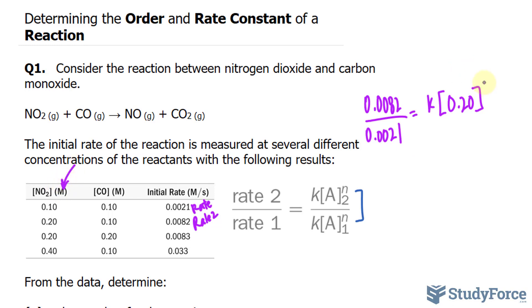That is being raised to the power of n. And don't mind this 1 and 2—those subscripts just represent the rate. At the bottom, we have k times the concentration of rate 1, 0.10, raised to the power of n. What we have to do now is solve for n.